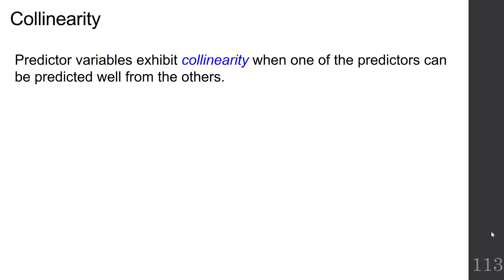And now we get to the topic of collinearity. Predictor variables exhibit collinearity when one of the predictors can be predicted well from the others.